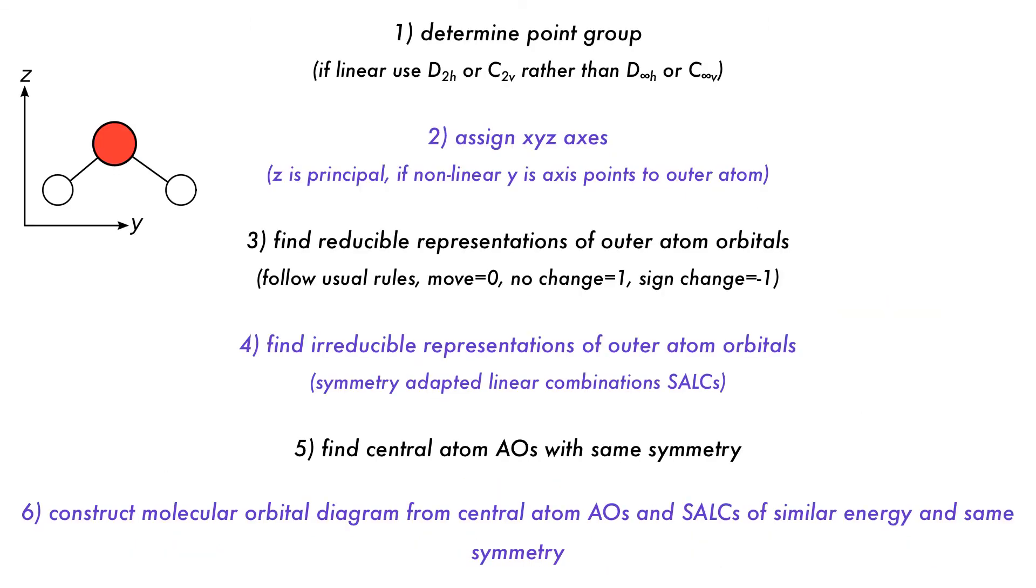From our previous video you may remember that we started solving molecular orbital problems using a six-step process involving determining point groups, assigning axes, finding reducible and irreducible representations of group orbitals, which were then combined with the central atom atomic orbitals of the same symmetry to obtain the full molecular orbital diagram.